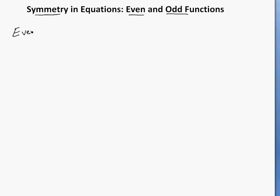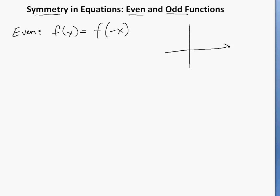An even function is basically if you have f of x, this is equal to f of negative x. So if you were to graph it, for all the negative x values, it's going to be the exact same. It's symmetric by the y-axis.